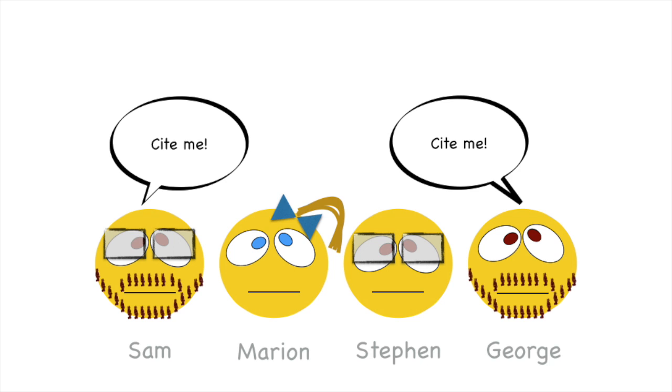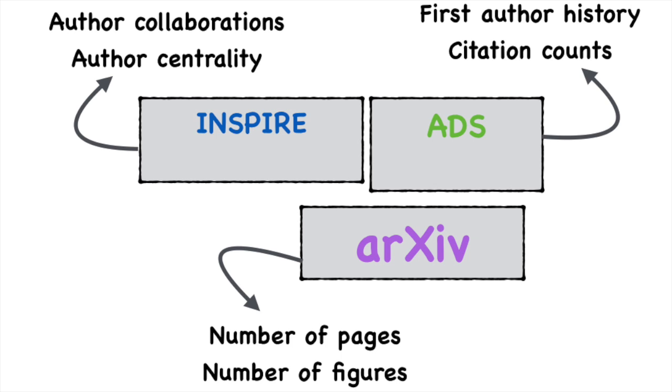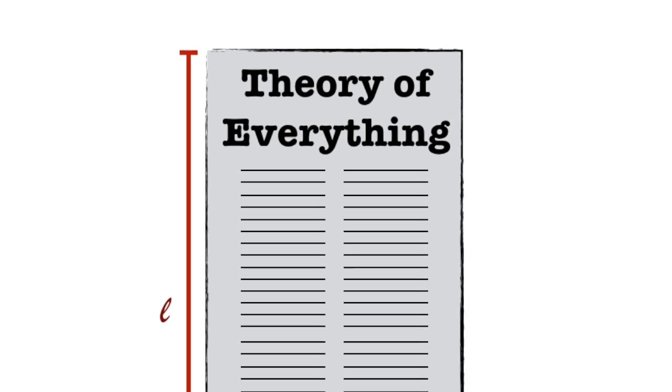Data science can't really help us write more papers, but maybe it can help us find cheat codes to getting more citations. So we collected as much data as we could from three different online databases. We have information about the papers themselves.